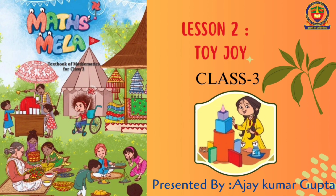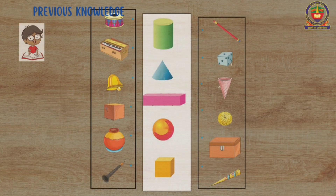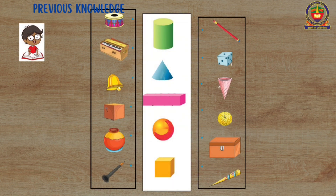Subject: Mathematics, Lesson 2 – Toy Joy, Class 3. Presented by Ajaykumar Gupta. Dear students, you use many shapes in your daily life. You have also learnt about various shapes in previous classes. Match these shapes with musical instruments and daily things.